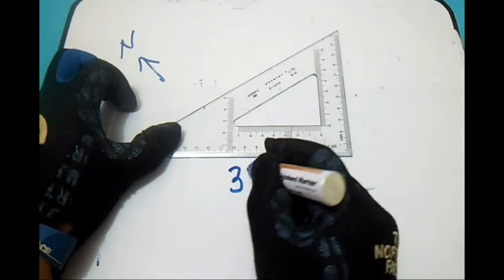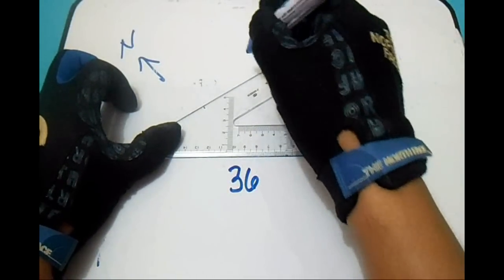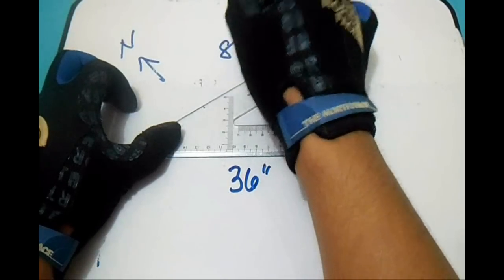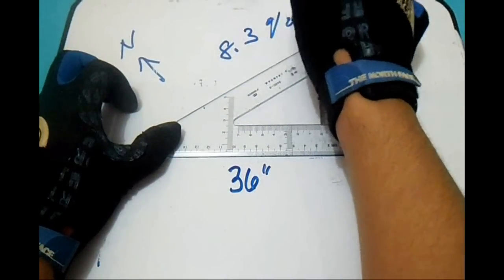This is 36 inches and we have 8.3% slope. We will find the set and the run and also the travel.